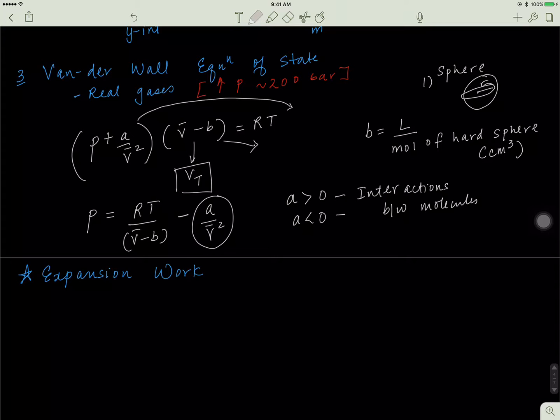So this is the Van der Waals equation. We'll come back to it in the future. Know what A means, know what B means, know what happens to the pressure of a real gas, know what happens to the volume of a real gas. The volume is always decreasing and the pressure increases or decreases depending on what sort of interactions you have between the molecules.